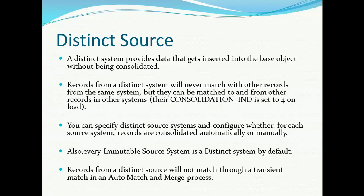What is transient match? Transient match means record one matches to two, two matches to three — so if that match sequence happens, the transient match result gives one matches to three. If records are coming from the distinct source, they will not match via transient match. Suppose records one and three are coming from the distinct source and record two is coming from some other source. Two can match with one and two can match with three, but one will not match with three — that will not happen in the case of a distinct source.